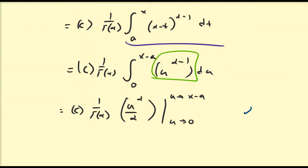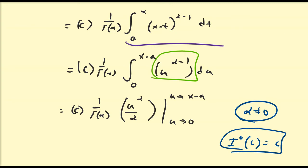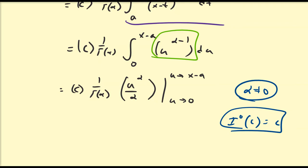So clearly we have an issue here — we cannot have α equal to 0. Now we know that the zeroth integral and the zeroth derivative is just the function itself, so this should equal c. But this definition does not imply that, which is a little uncomfortable. You can probably see how this goes away, because this equals c divided by (α · Γ(α)) times u^α, and evaluating that gives us (x − a)^α. So this is our relationship.